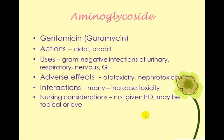Aminoglycosides — gentamicin — are bactericidal and broad-spectrum. They're frequently used for respiratory tract infections. Their biggest problem is that they are ototoxic and nephrotoxic. They have a relatively narrow therapeutic range, and peak and trough levels will be monitored. We want to know what symptoms to look for — ototoxicity affects the inner ear: tinnitus, dizziness, gait disturbance, and hearing loss. This is when we really want to do a whisper test and notice if the patient has changed their volume when speaking.